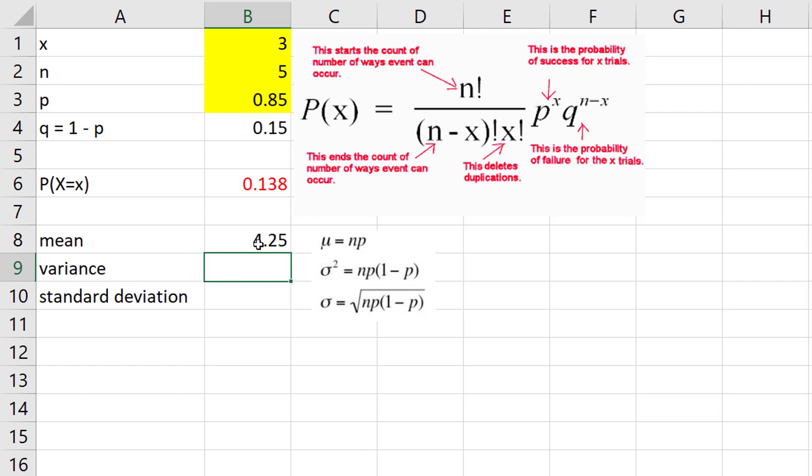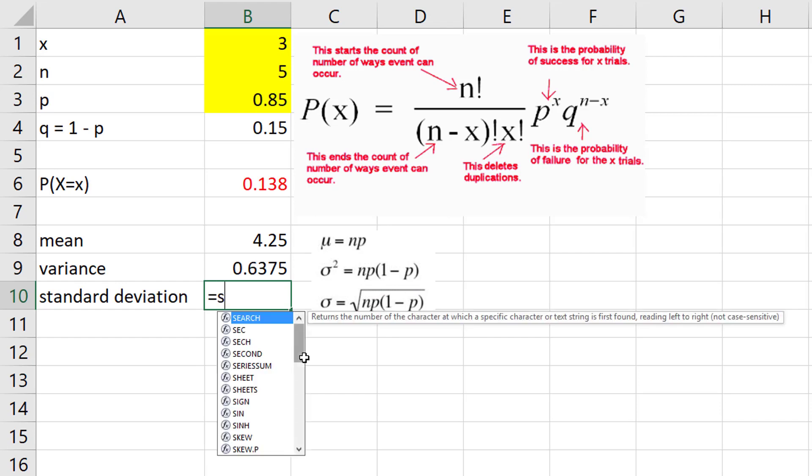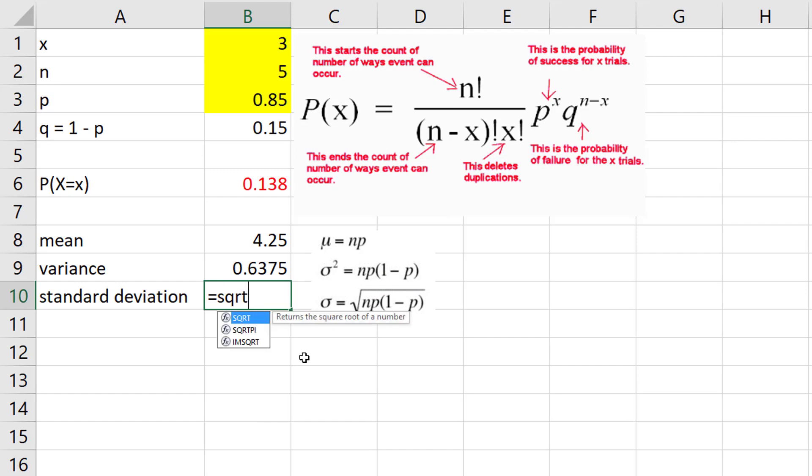My variance, which is n times p times one minus p, which is q. And then my standard deviation—probably the easiest thing to do is just take the square root of my variance. So equals SQRT, so Excel even has a built-in square root formula. Click on that cell, close my parentheses, and I get all my values.